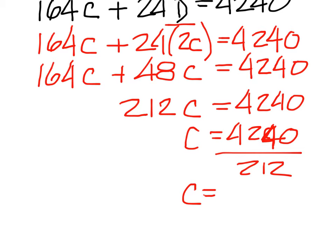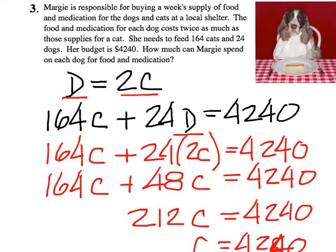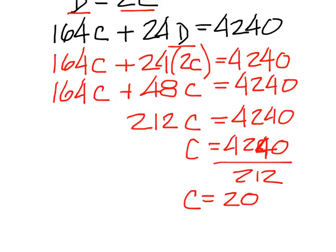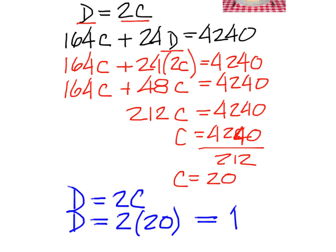But the question was asking how much can Margie spend on each dog for food and medication. We know from the very beginning where we had D equals 2C that a dog is twice that of a cat, so 2 times 20 will give me 40.